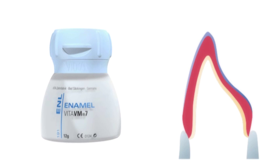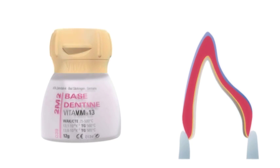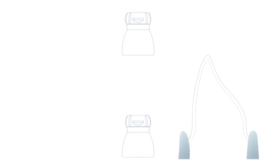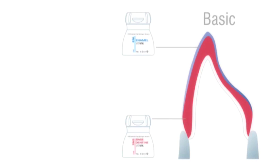The VitaVM layering concept is modeled on nature and differs clearly from all known layering concepts. With this unified concept you are competent in all indications — quick to learn, accurate, and simple to use. The basic layering is built up with base dentine and enamel, suitable for the reproduction of intensive tooth shades, also in the case of thin wall thicknesses. The VitaVM layering concept covers the basic layering for ceramic and acrylic.